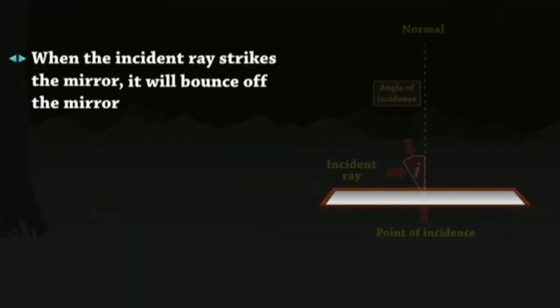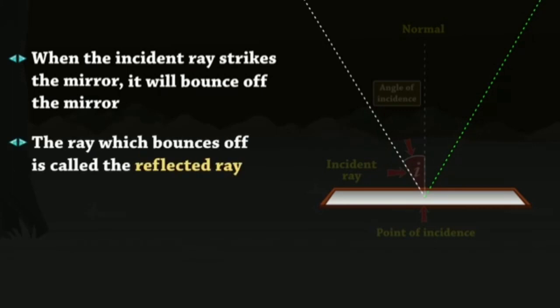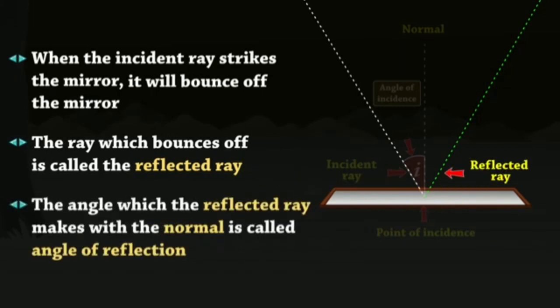When the incident ray strikes the mirror, it will bounce off the mirror. This bounced ray is called the reflected ray.